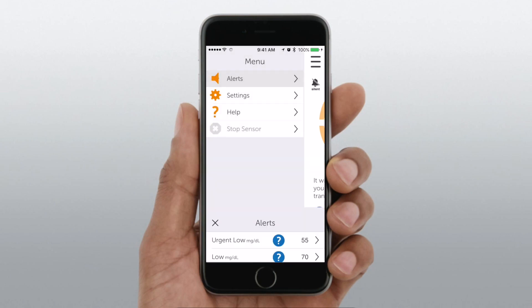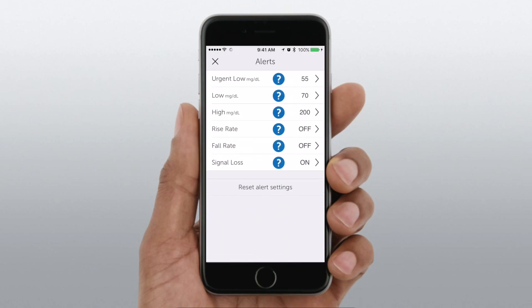We're going to swipe open that left menu on the left-hand side. We're going to check out alerts. You can customize all of these alerts just like you could on the receivers. You can set the rise rate alerts as well as the low, the fall rate alerts. And you can customize these to any points that you'd like as well as any rate at which you would like.